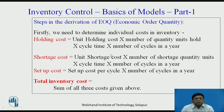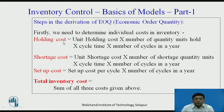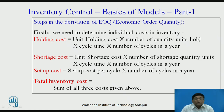Let us discuss a brief, common standard procedure for derivation of economic order quantity, just to make the process easy to remember. First, we calculate holding cost on an annual basis, considering unit holding cost specified as rupees per unit item per unit time. We multiply this unit cost by the number of quantity items held in stock and by cycle time to get the holding cost per cycle. Multiplied again by the number of cycles in a year, we get the annual holding cost.